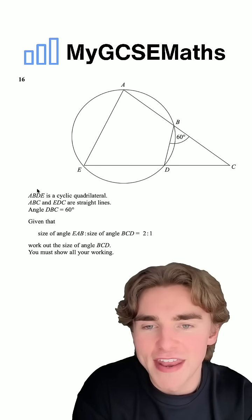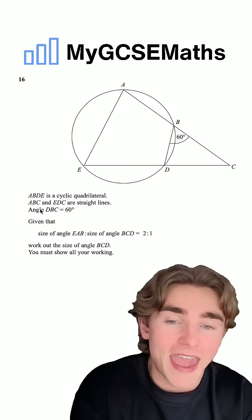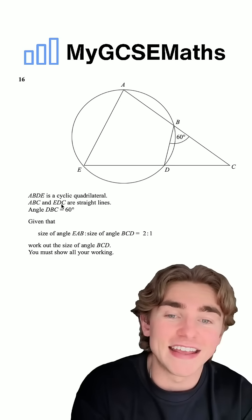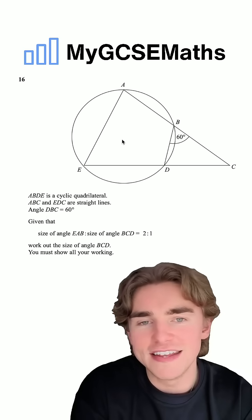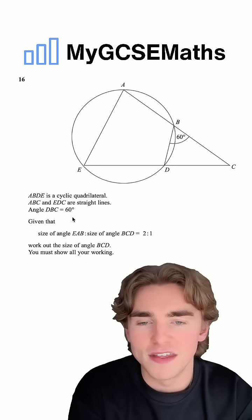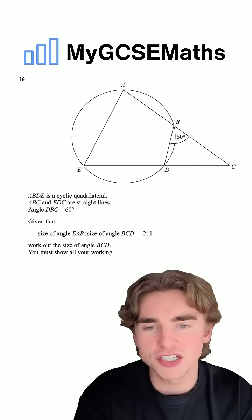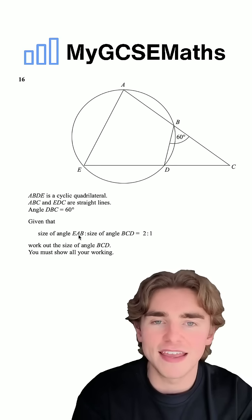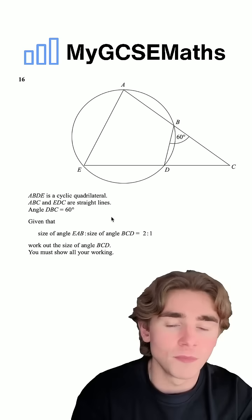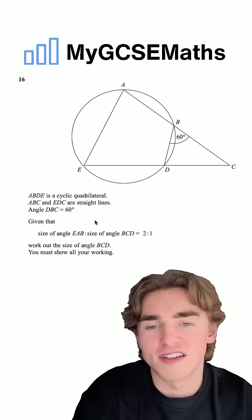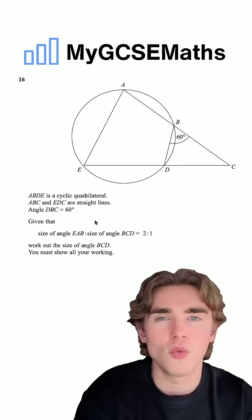The question says that ABDE is a cyclic quadrilateral. ABC and EDC are straight lines. We're told that angle DBC is 60 degrees, and given that the ratio of the size of angle EAB to BCD is 2 to 1, work out the size of angle BCD. You must show all of your working.